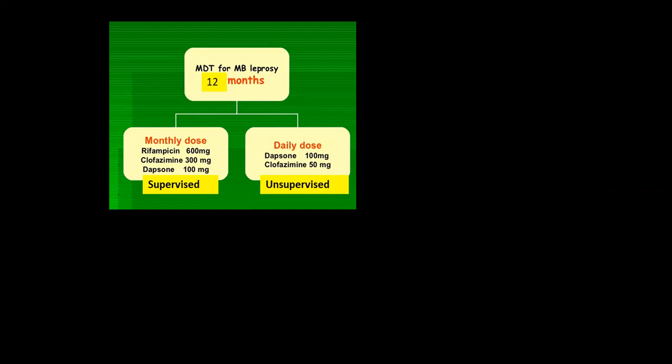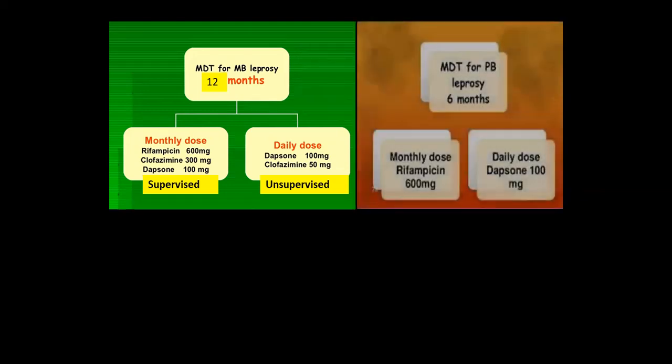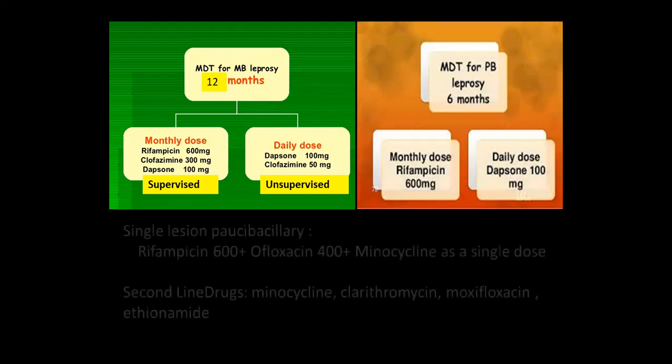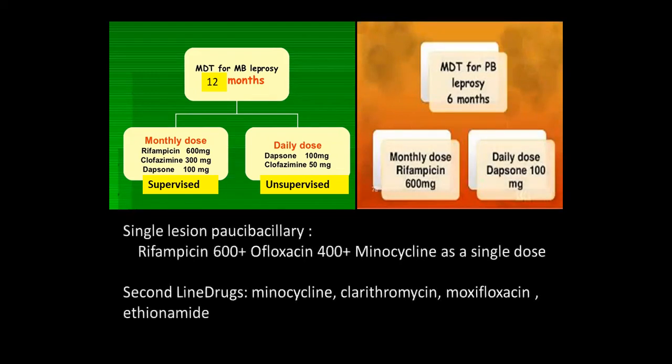MDT is supervised and unsupervised — the patient comes monthly, is given treatment, and then given medicines for daily taking. For paucibacillary: six months treatment — we do not give clofazimine. For a single lesion paucibacillary: rifampicin or ofloxacin plus minocycline as second-line. Second-line drugs are minocycline, clarithromycin, moxifloxacin, and ethionamide.